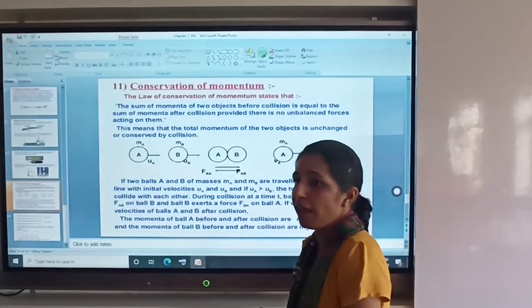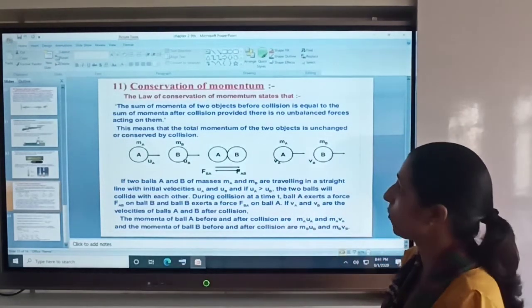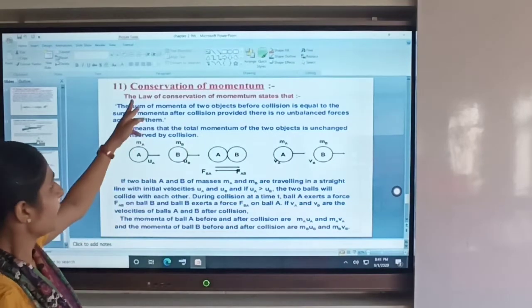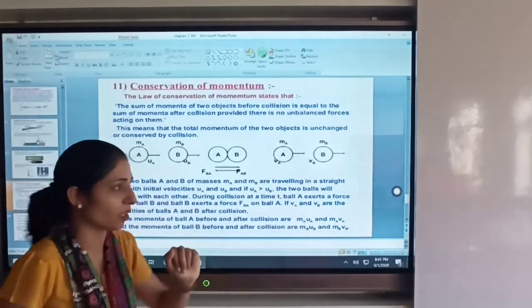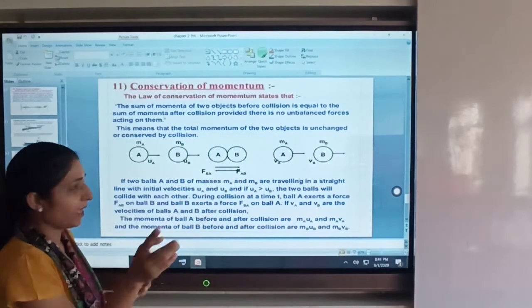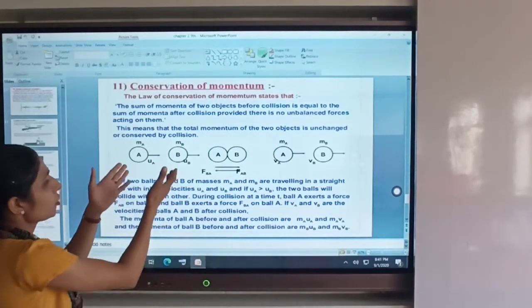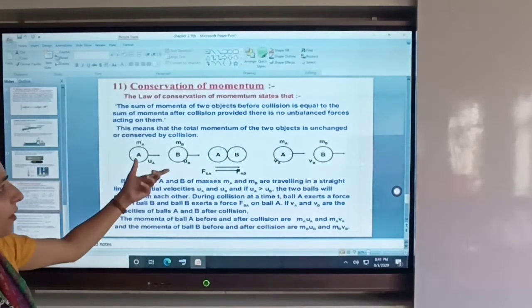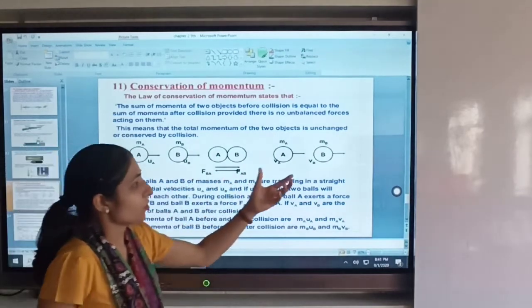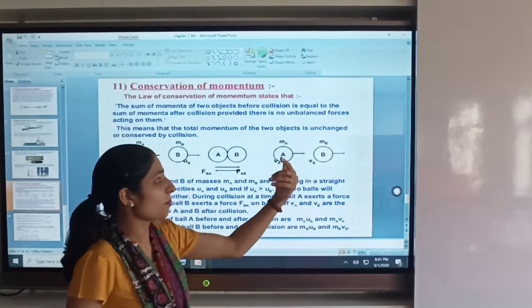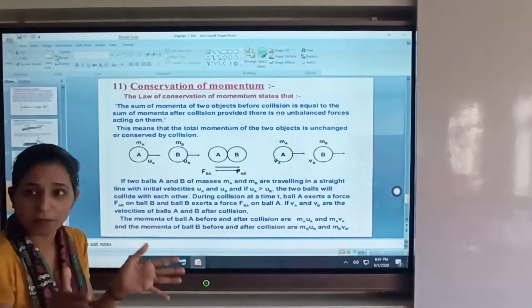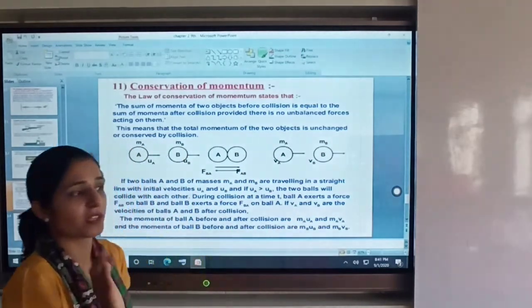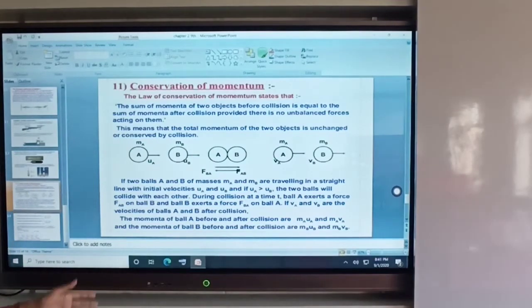What does conservation of momentum state? Sum of momentum of two objects before collision is equal to total momentum after collision. Before collision, total momentum is always equal to total momentum after collision. This is called the law of conservation of momentum.